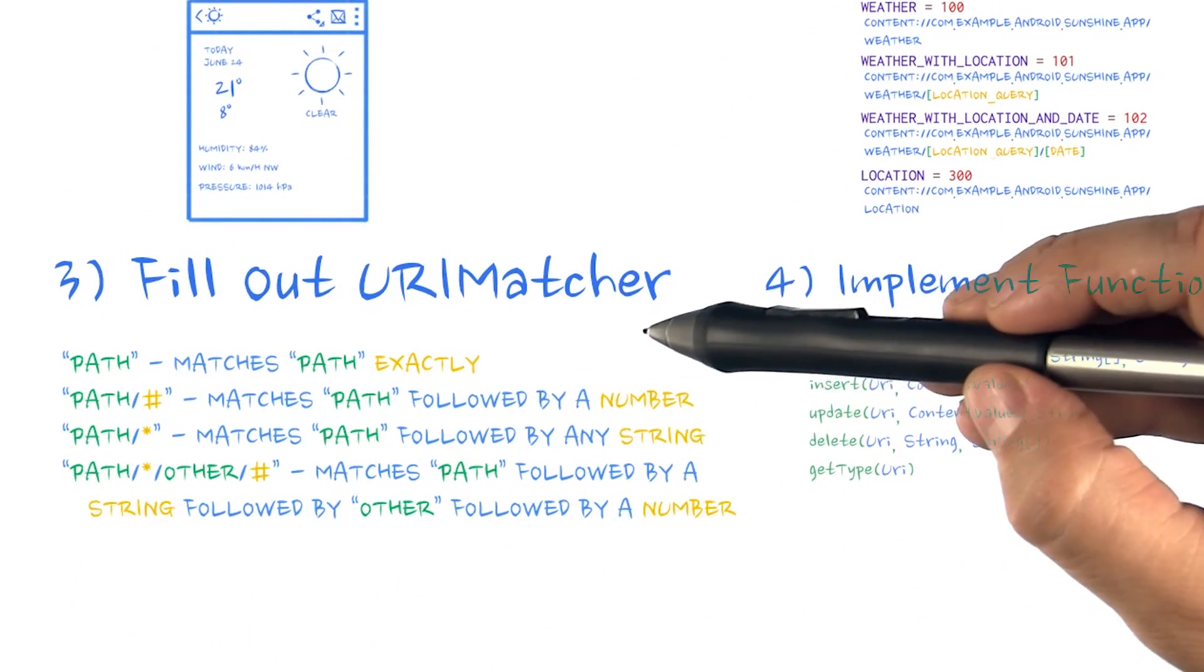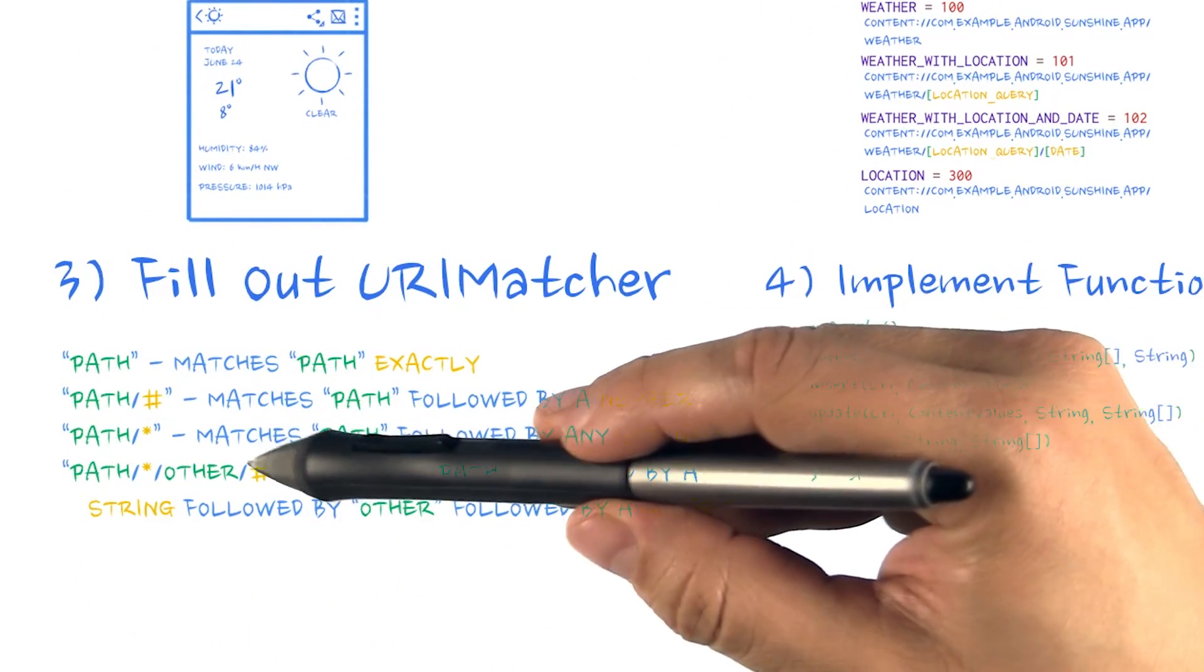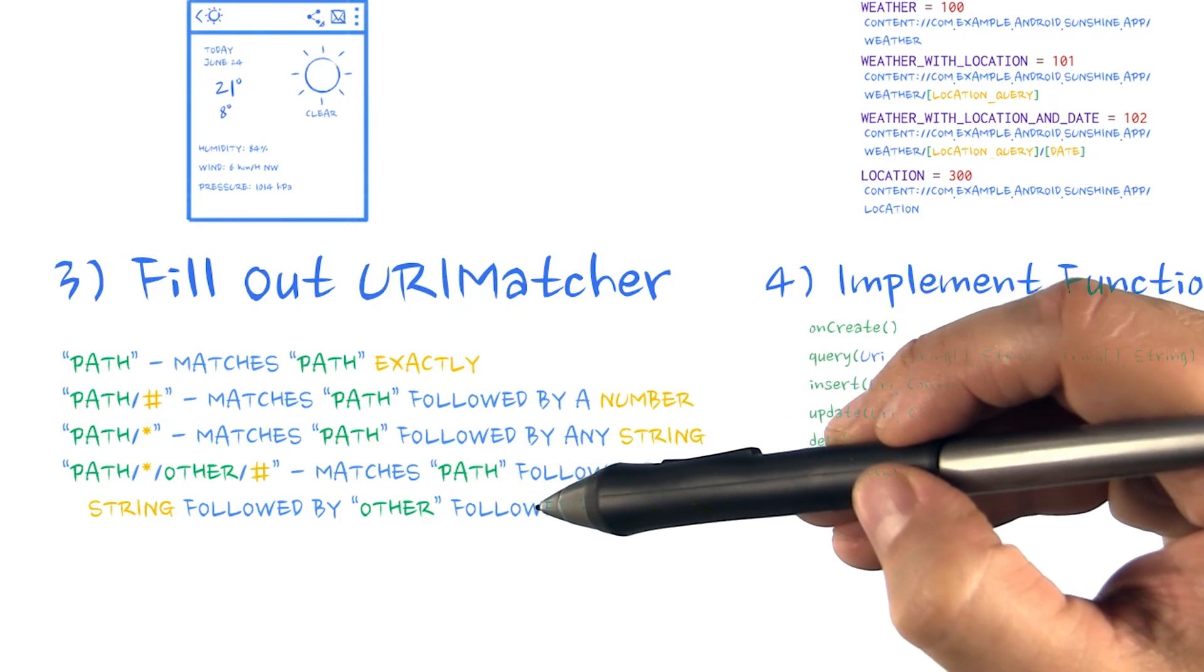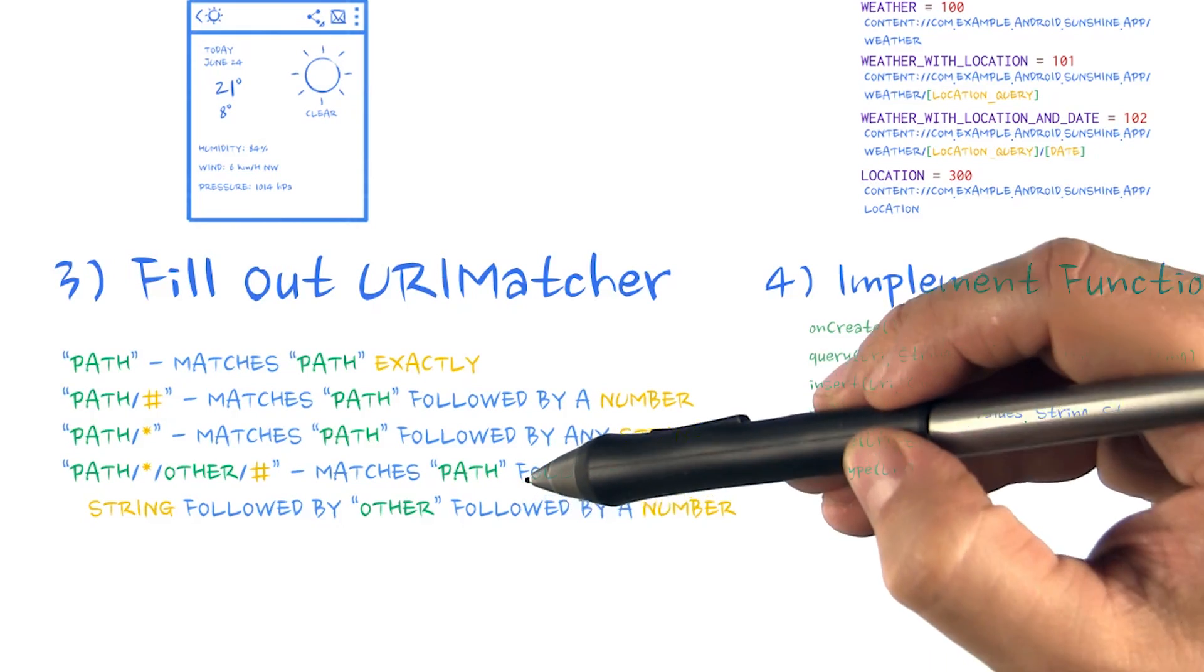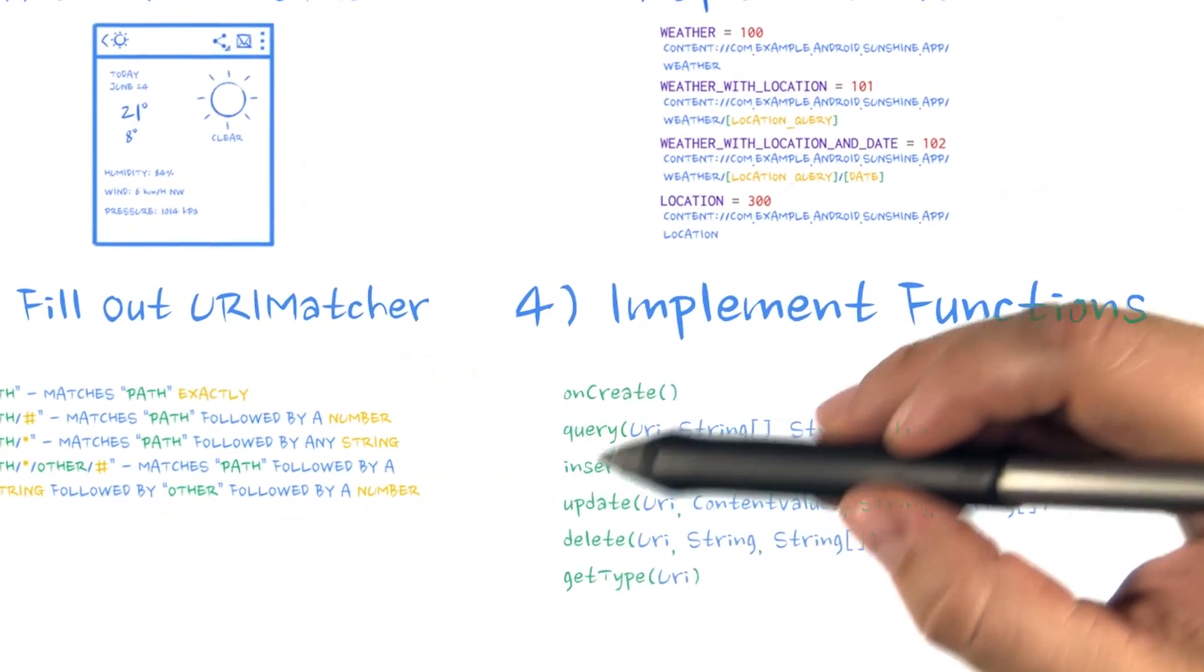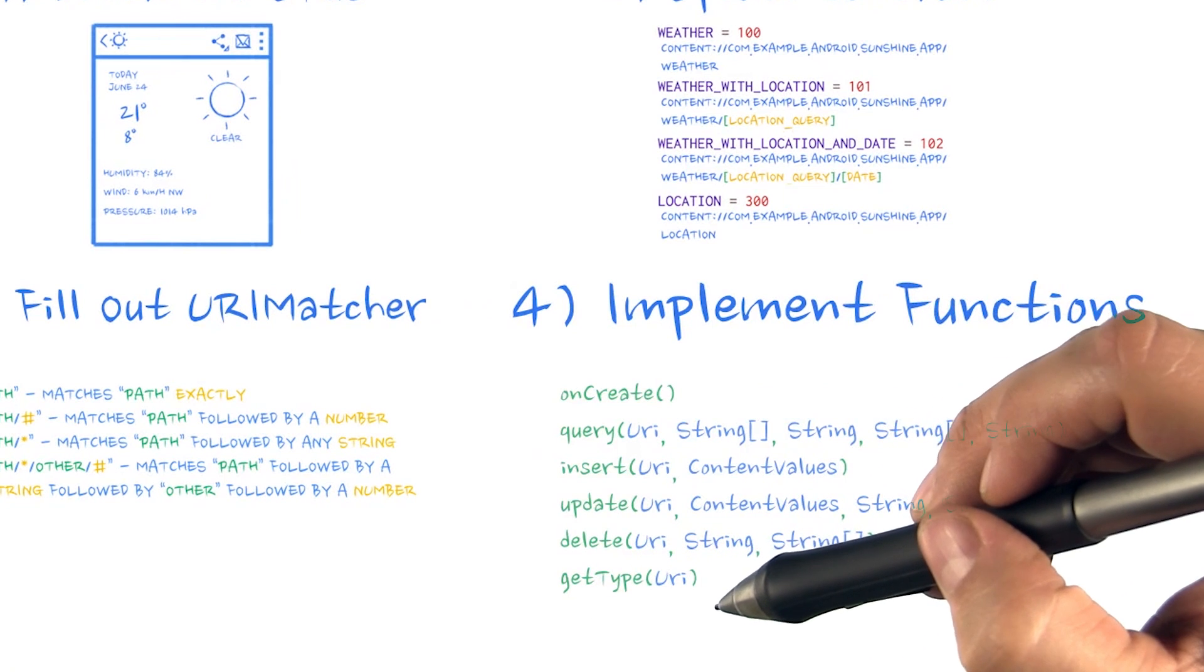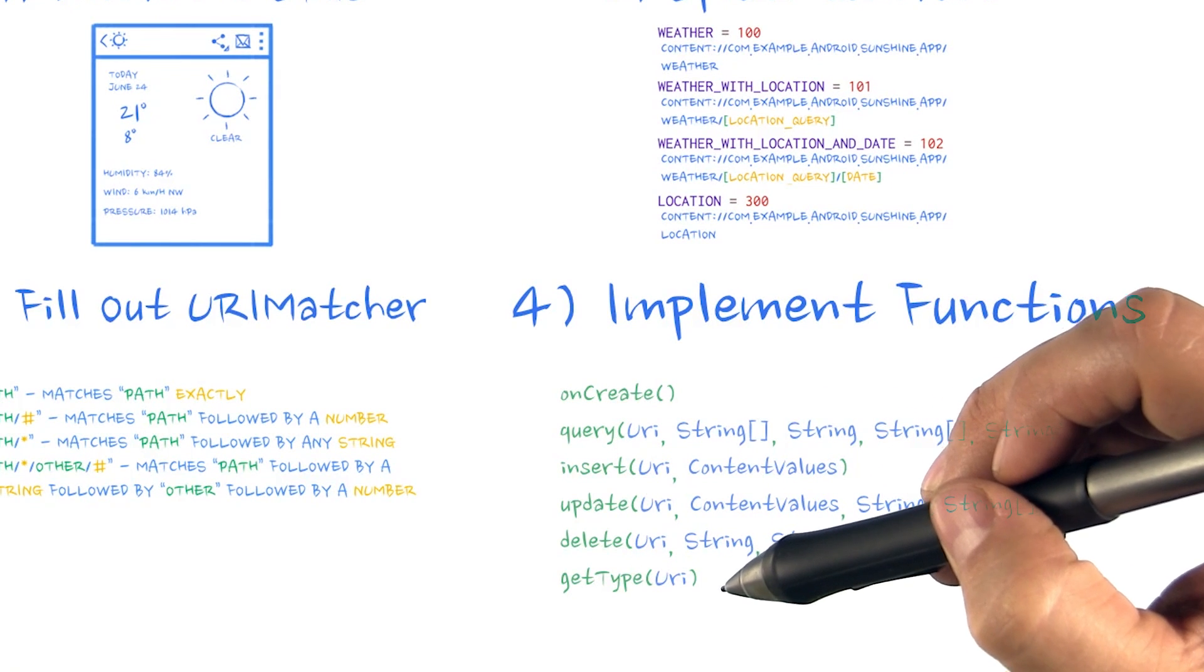From there, we built a URI matcher that matches these URIs to constants we use in switch statements in all of the other required content provider functions. Then we implemented the get type function to return the type of cursor returned for each URI.